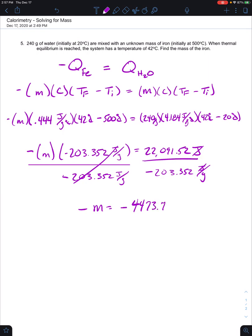Remember, we can't leave it as a negative variable. So we're going to flip the sign over and make it positive M. And in doing so, we're also going to change this to positive. So it's going to be 4,473.7 grams. That would have been the starting mass of our iron sample.